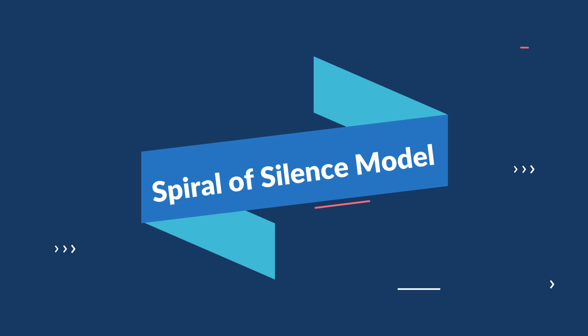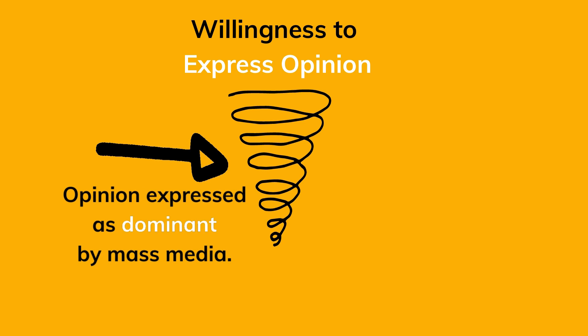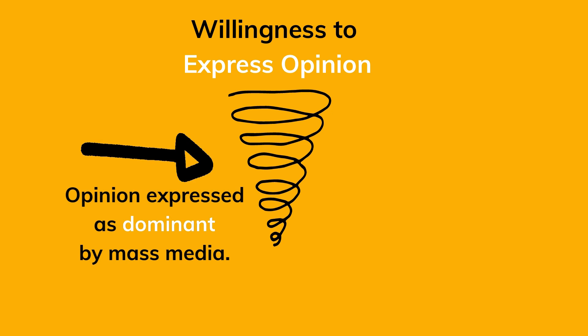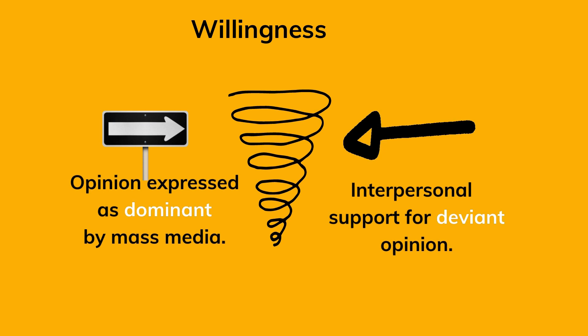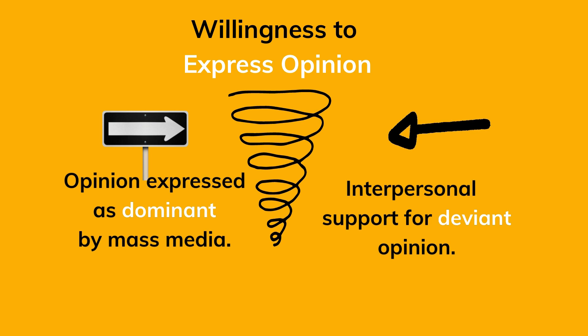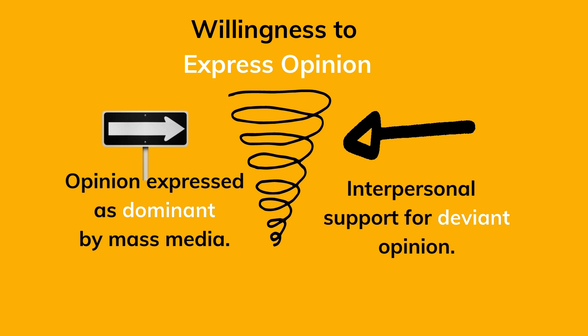Let's now discuss the Spiral of Silence model in greater detail. At the top of the spiral is the willingness to express opinion, which is influenced by the opinion expressed as dominant in the mass media. The mass media expresses opinions in different ways — through statistics, news reports, or the opinions of experts. On the other hand is societal pressure or lack of support for deviant opinion; there is generally very little support for open expression of non-dominant opinion.